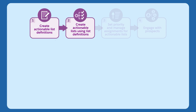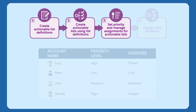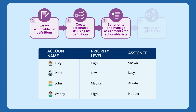Step 3: list creators configure an actionable list. After creating actionable lists, list creators can set priorities for an actionable list and relate an OmniScript to a list to guide sales or service agents when they engage with prospects.